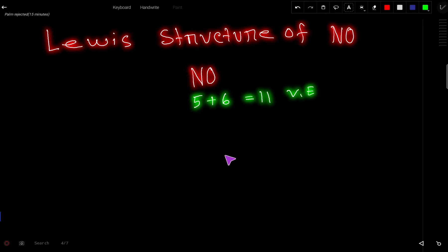Let us see. So at first these valence electrons will connect these two atoms together. Here nitrogen is the central atom and oxygen is the outer atom.